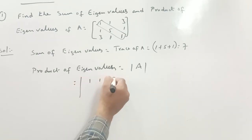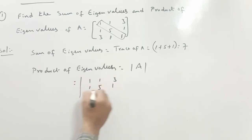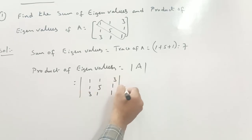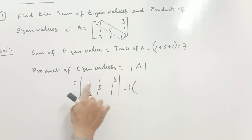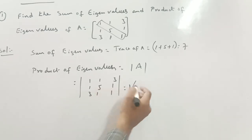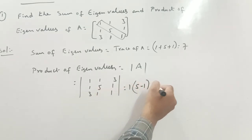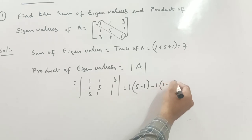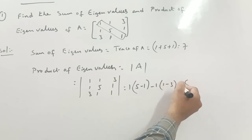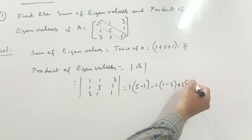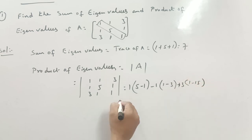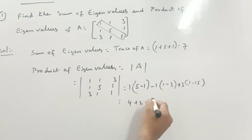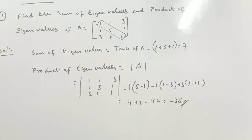That is equal to the determinant of [1, 1, 3; 1, 5, 1; 3, 1, 1]. Expanding: 1 into (5 minus 1) minus 1 into (1 minus 3) plus 3 into (1 minus 15), which gives 4 plus 2 minus 42. So 6 minus 42 equals minus 36.